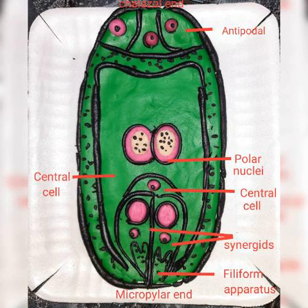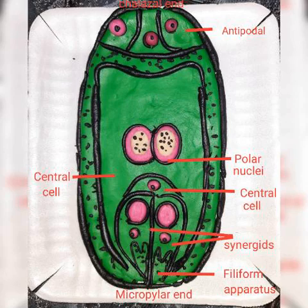The filiform apparatus plays an important role in guiding the pollen tube into the synergid. Three cells are at the chalazal end and are called the antipodals. The large central cell has two polar nuclei. Thus a typical angiosperm embryo sac at maturity possesses an eight-nucleated and seven-celled condition.